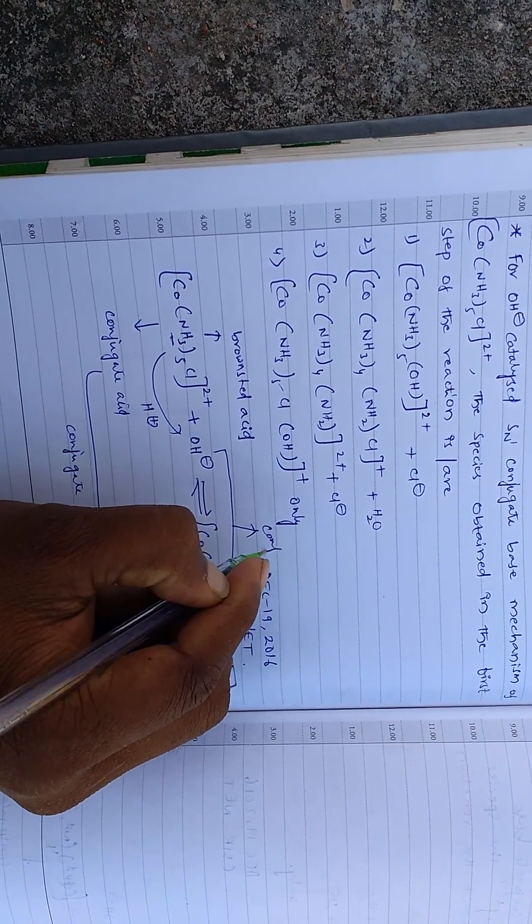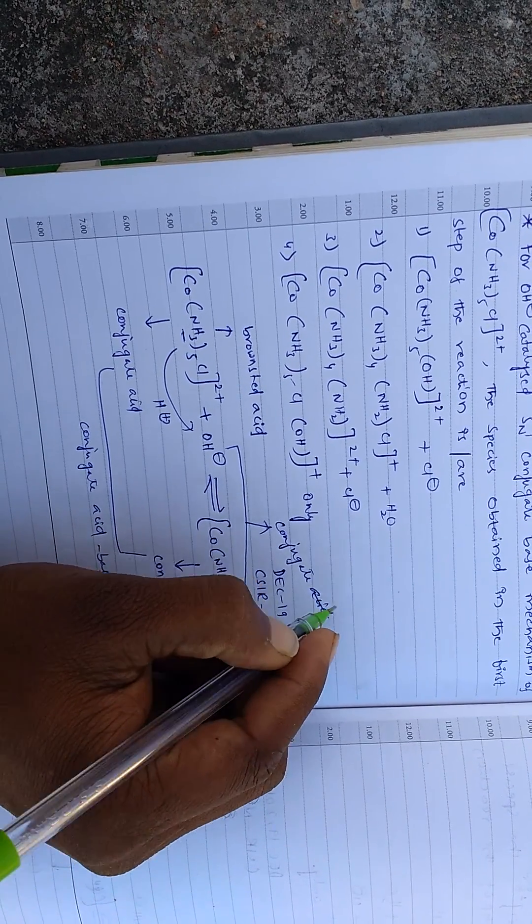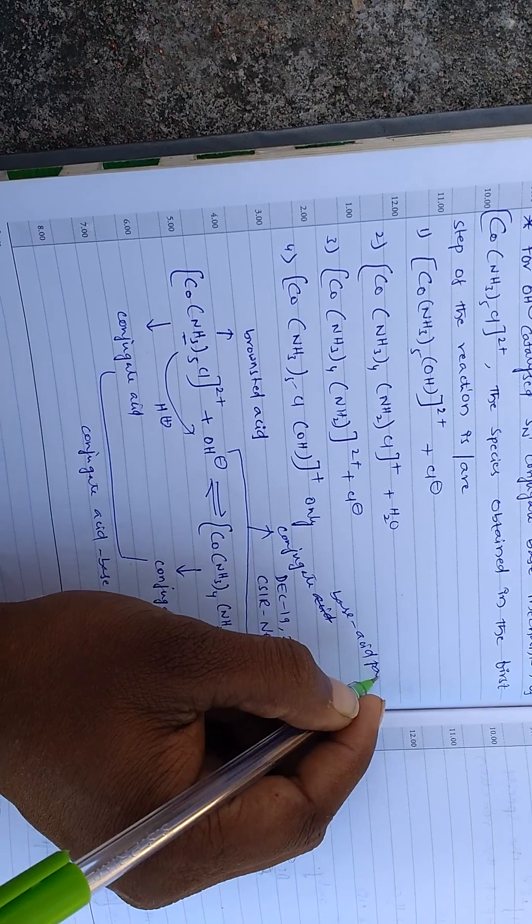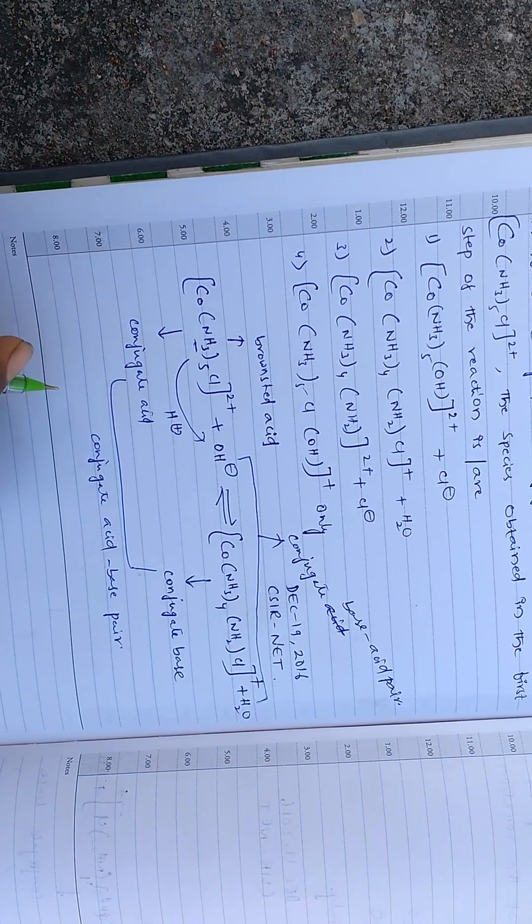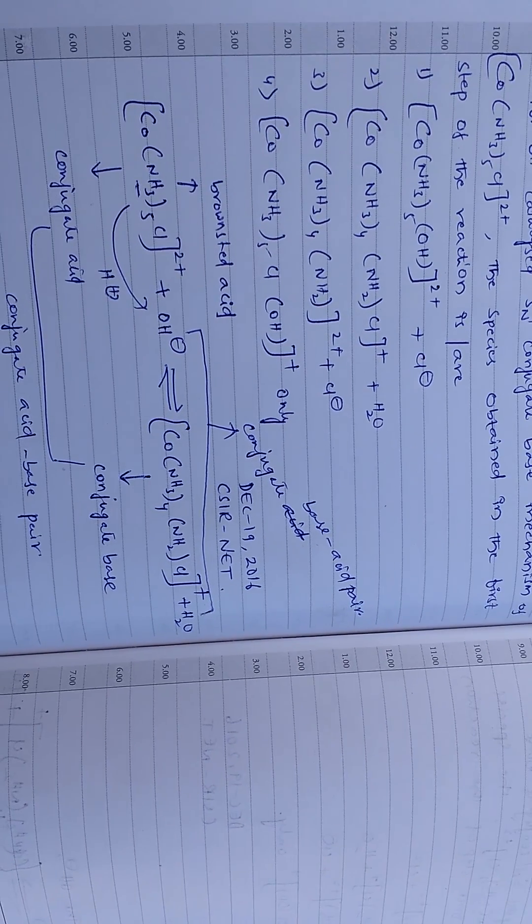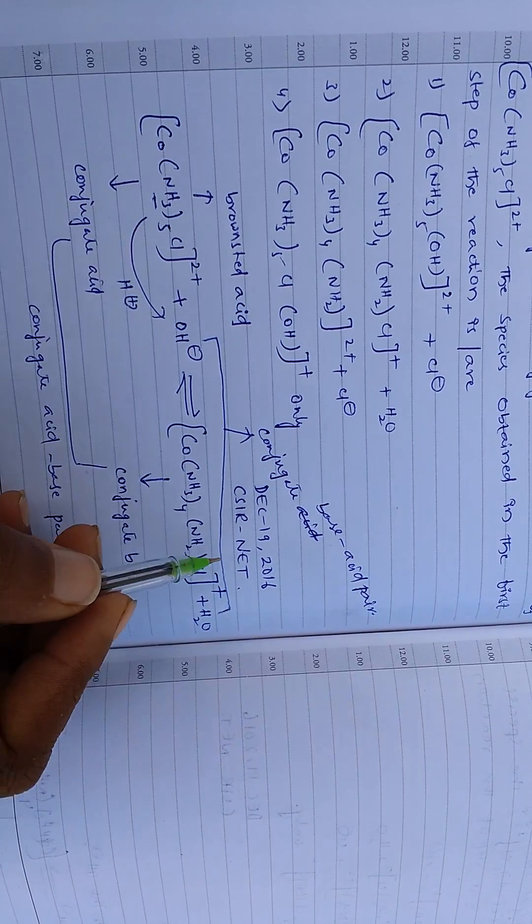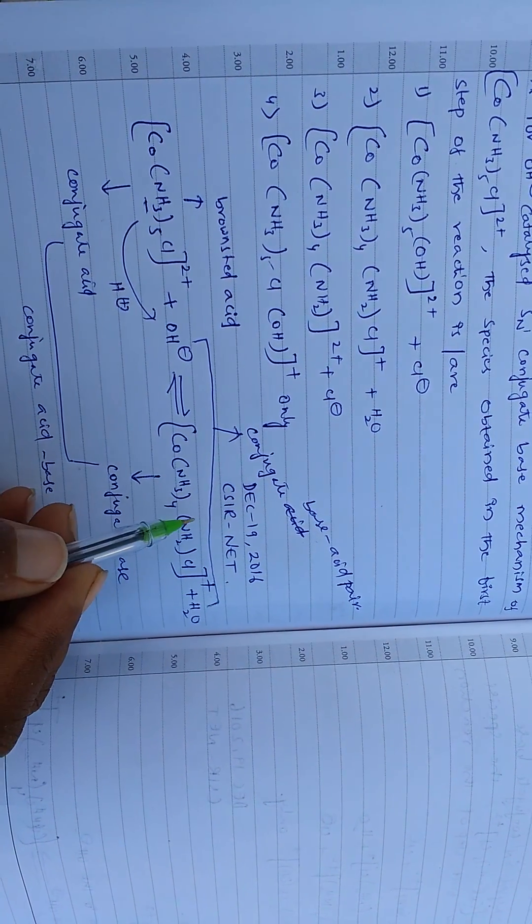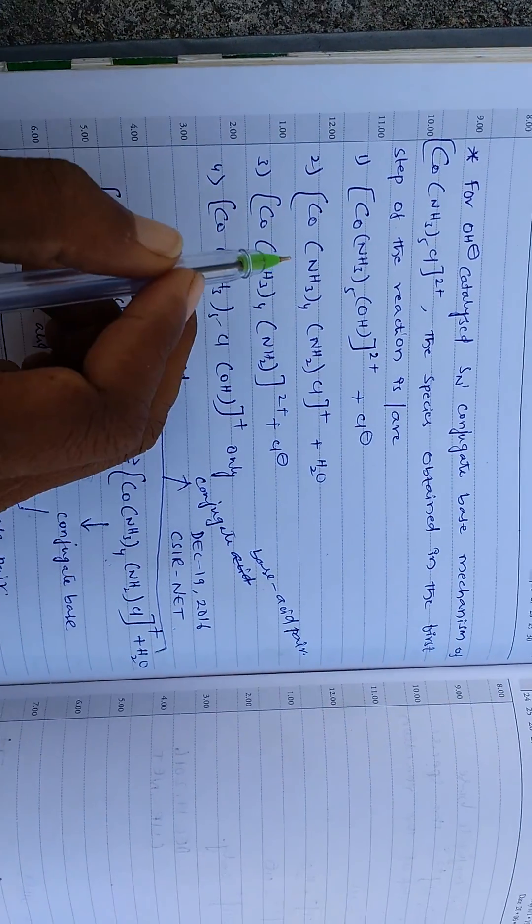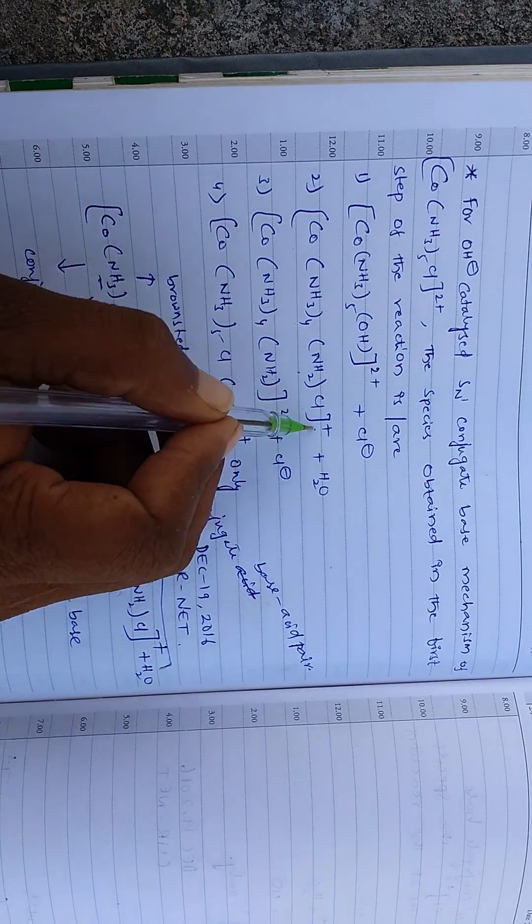From this we can observe the answer. So this is the conjugate base which is formed in the initial step of the SN1CB mechanism. So it is there in second option, Co(NH3)4NH2Cl plus plus H2O. So second option is the correct answer.